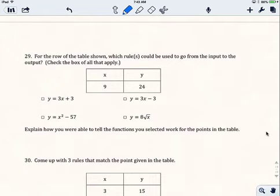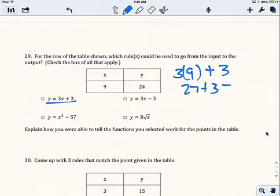So in order to figure it out, I just have to test things. I'm going to start with y=3x+3. So I'll take the x value, multiply it by 3, and add 3. So 3 times 9 is 27, plus 3 equals 30. So this one does not work.